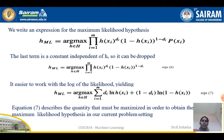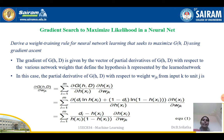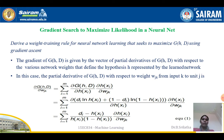Our main aim is to maximize this expression to get the maximum likelihood hypothesis. For that, we perform a gradient search to maximize the likelihood in a neural network. We derive a weighted training rule for neural network learning that seeks to maximize G(h, D) using gradient ascent. The gradient G is defined as the vector of partial derivatives of G(h, D) with respect to the various network weights defining hypothesis h.